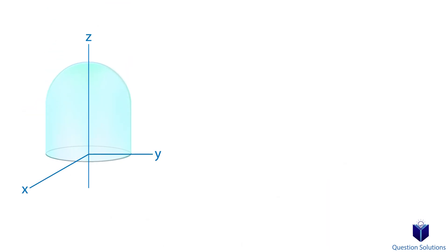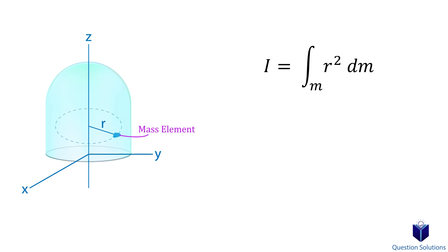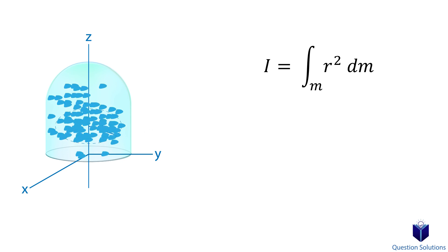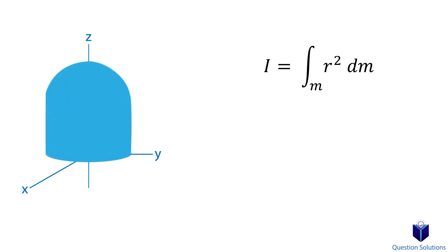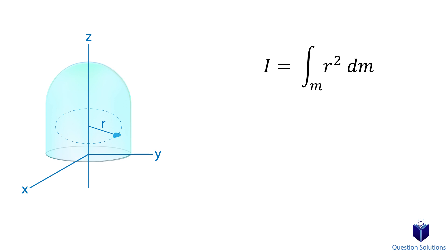Imagine we have an object like this. We can find the mass moment of inertia about the z-axis using this equation. R is the perpendicular distance from the z-axis to a random mass element. If we add up all of these tiny mass elements, that makes up our whole object. Now suppose we have to consider the density of this object. If you think back to math class, you might remember that the mass of an object is equal to the density multiplied by the volume.